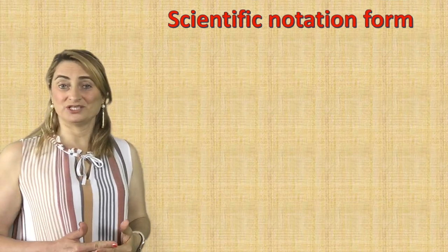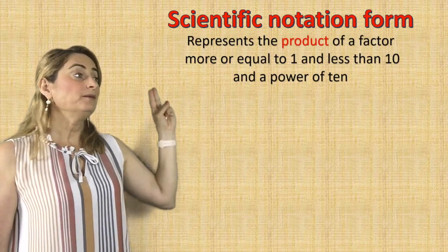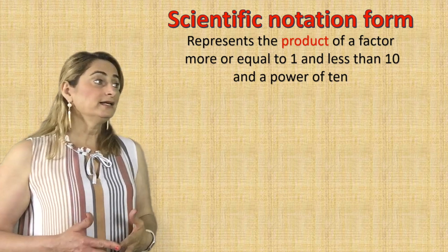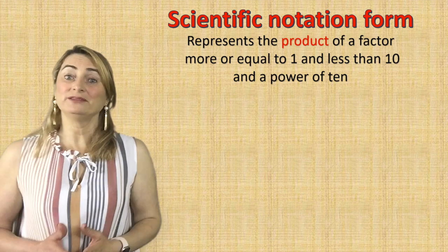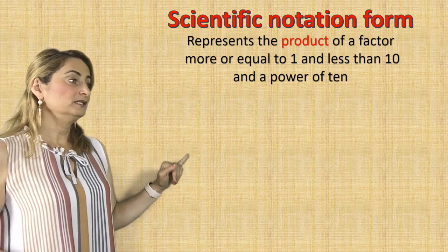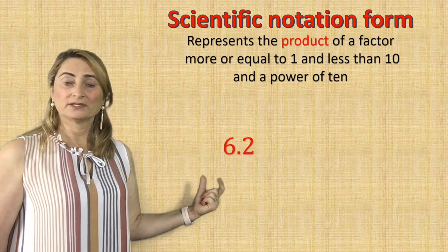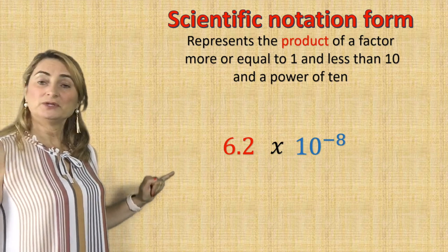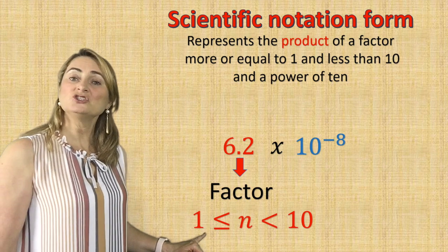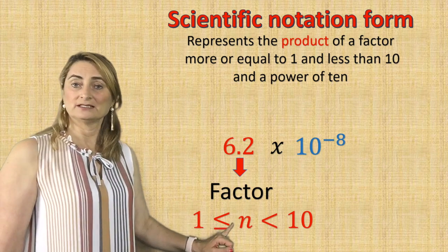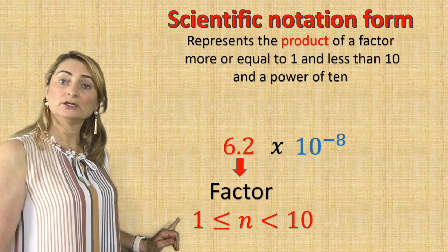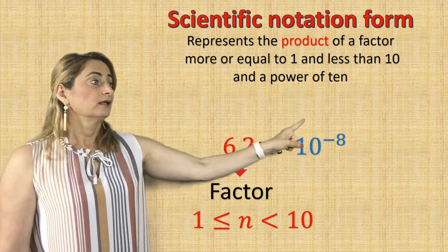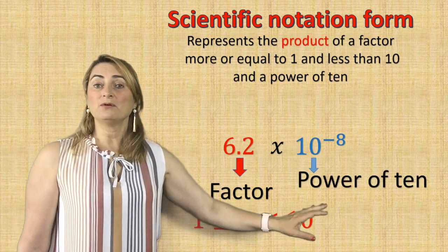So what is scientific notation form? Scientific notation represents the product of a factor times a power of 10. For example, 6.2 times 10 to the power of negative 8. The factor is 6.2, and that factor has to be greater than or equal to 1 and less than 10 — so it could be anywhere from 1 to 9.99999, but it can't reach 10. And 10 to the power of negative 8 is the power of 10 part.